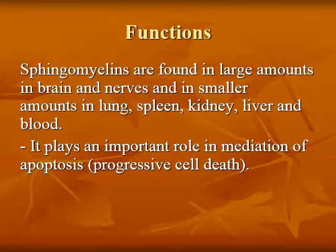Functions of sphingomyelin: found in large amounts in brain and nerve, and in smaller amounts in lung, spleen, kidney, liver, and blood. It plays an important role in mediation of apoptosis, also known as programmed cell death.